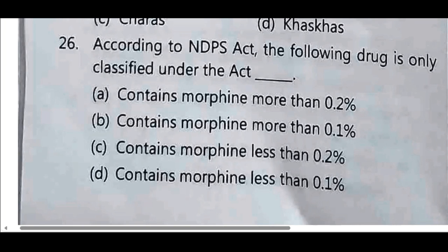According to the NDPS Act, the following drug is only classified under the Act: Option A — contains morphine more than 0.2%.